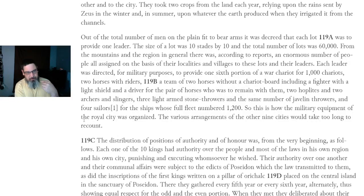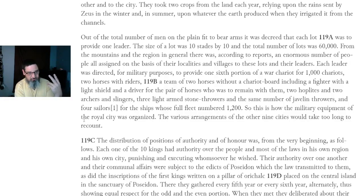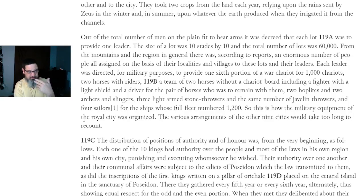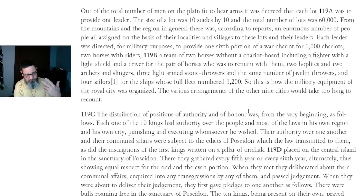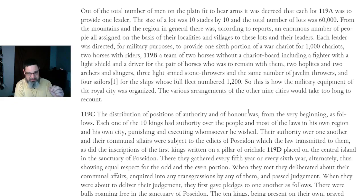Out of the total number of men on the plain fit to bear arms, it was decreed that each lot was to provide one leader. The size of the lot was 10 stades by 10, and the total number of lots was 60,000. That's big. From the mountains and the region in general there were, according to reports, an enormous number of people all assigned on the basis of their localities and villages to these lots and their leaders. Each leader was directed to provide for military purposes one-sixth portion of a war chariot, two horses with riders, two hoplites, two archers, slingers, three light-armed stone throwers, three javelin throwers, and four sailors — for the ships whose full fleet numbered twelve hundred.